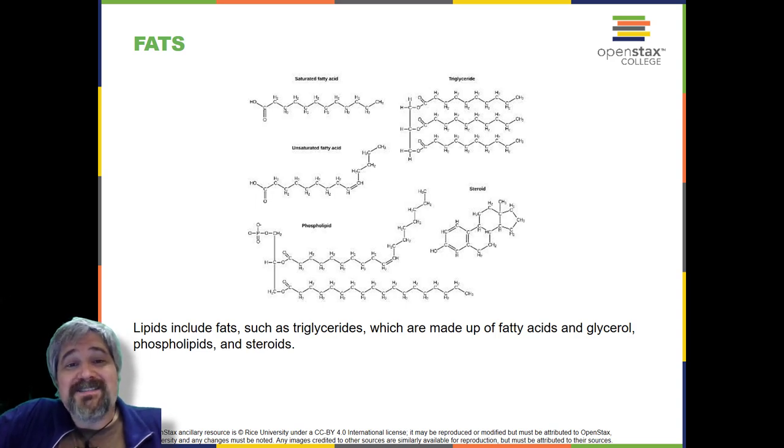Saturated fats tend to get packed tightly and are solid at room temperature. Animal fats with stearic acid and palmitic acid contained in meat and the fat with butyric acid contained in butter are examples of saturated fats. Mammals store fats in specialized cells called adipocytes, where globules of fat occupy most of the cell. In plants, fat or oil is stored in seeds and is used as a source of energy during embryonic development. Unsaturated fats or oils are usually of plant origin and contain unsaturated fatty acids. The double bond causes a bend or a kink that prevents the fatty acid from packing tightly, keeping them liquid at room temperature. Olive oil, corn oil, canola oil, and cod liver oil are examples of unsaturated fats.